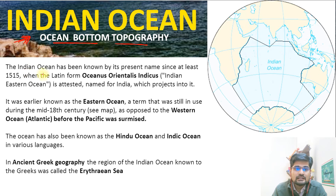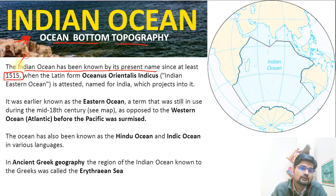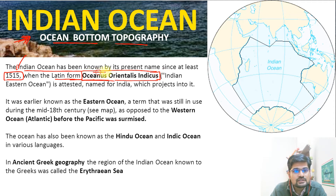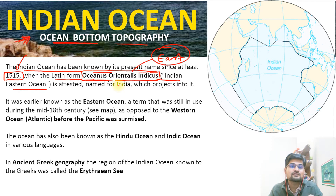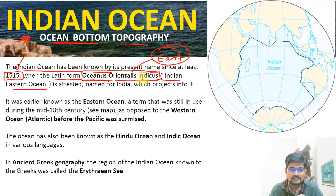The Indian Ocean has been known by its present name since 1515, going back to the Age of Discovery, when the Latin form used was Oceanus Orientalis Indicus. 'Orient' basically means East, so this refers to the Eastern Indian Ocean — that's important to remember.